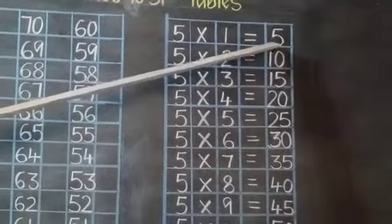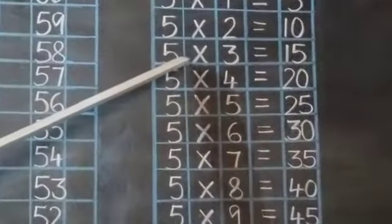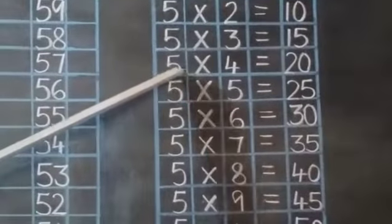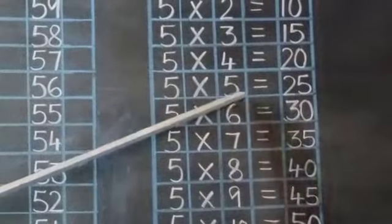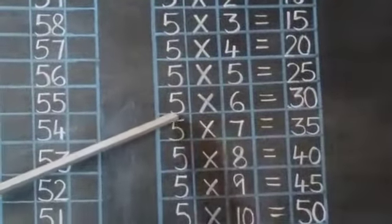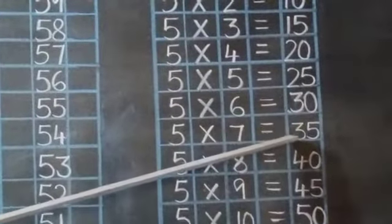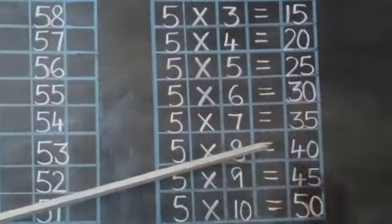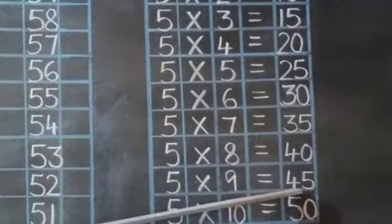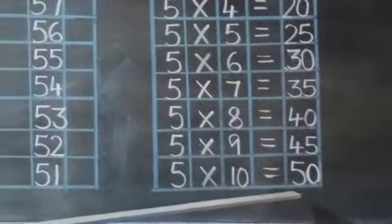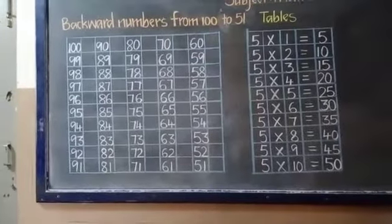5 ones are 5, 5 twos are 10, 5 threes are 15, 5 fours are 20, 5 fives are 25, 5 sixes are 30, 5 sevens are 35, 5 eights are 40, 5 nines are 45, 5 tens are 50. We can learn the tables through this concept also.